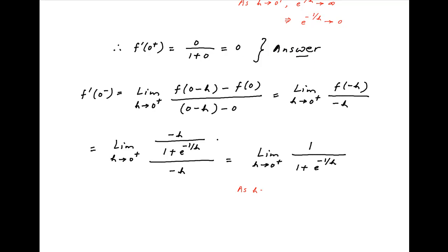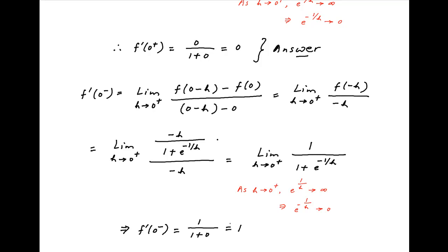Now as h tends to 0 from the positive side, 1/h tends to infinity, therefore e^(1/h) tends to infinity, and therefore its reciprocal e^(-1/h) tends to 0. Using this result, the value of f'(0) from the negative side is equal to 1 / (1 + 0), which is equal to 1.